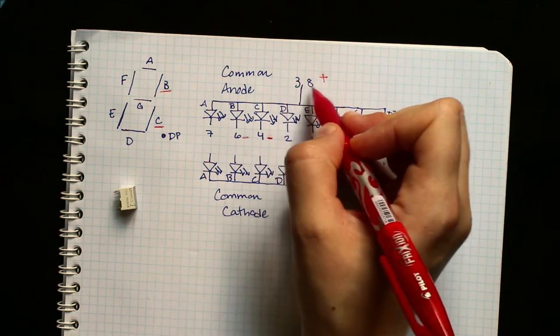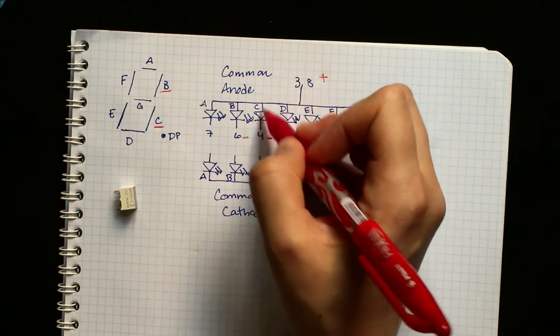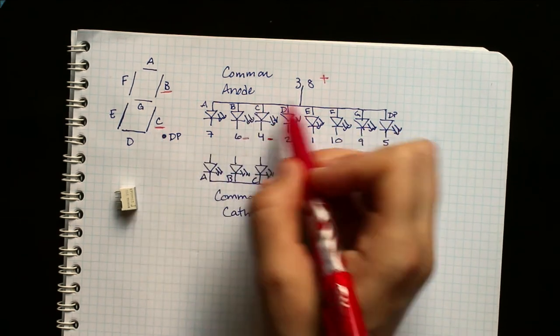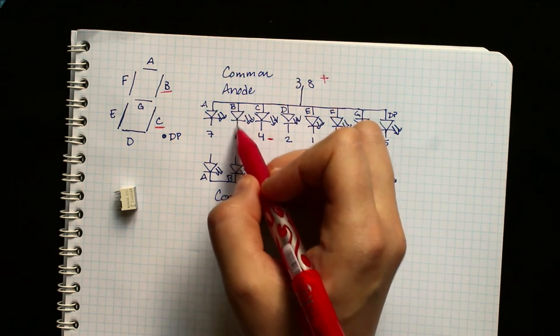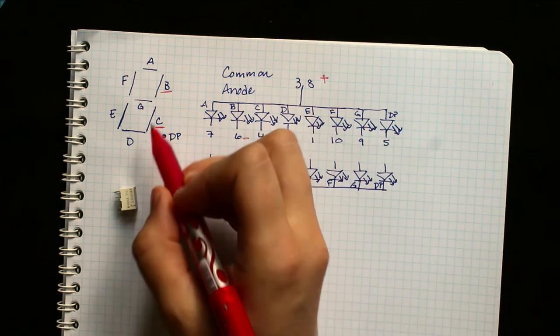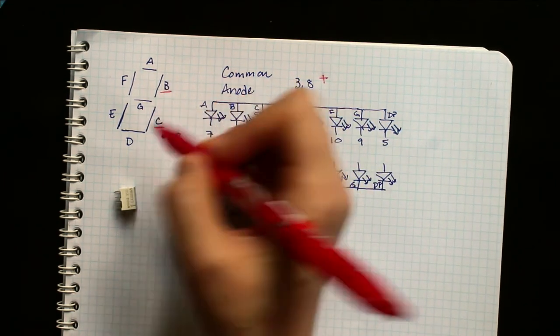Flow from pin 3 or 8 to 4 illuminating the C, and at the same time, pin 3 or 8 through B illuminating this segment. So you'd get your 1.